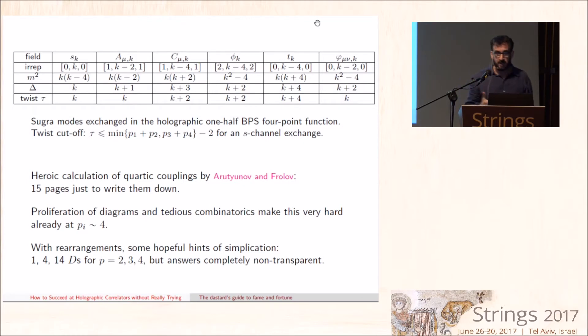One sees some hopeful hints of simplifications by doing a lot of algebra, but what's worse is that after you have done all this work, you don't know what to do with it, because the answers take a completely non-transparent form. Even extracting the leading OPE singularity takes some amount of fiddling. So clearly there must be a better way, and our prejudice in revisiting this problem is that this must all be fixed by symmetry.